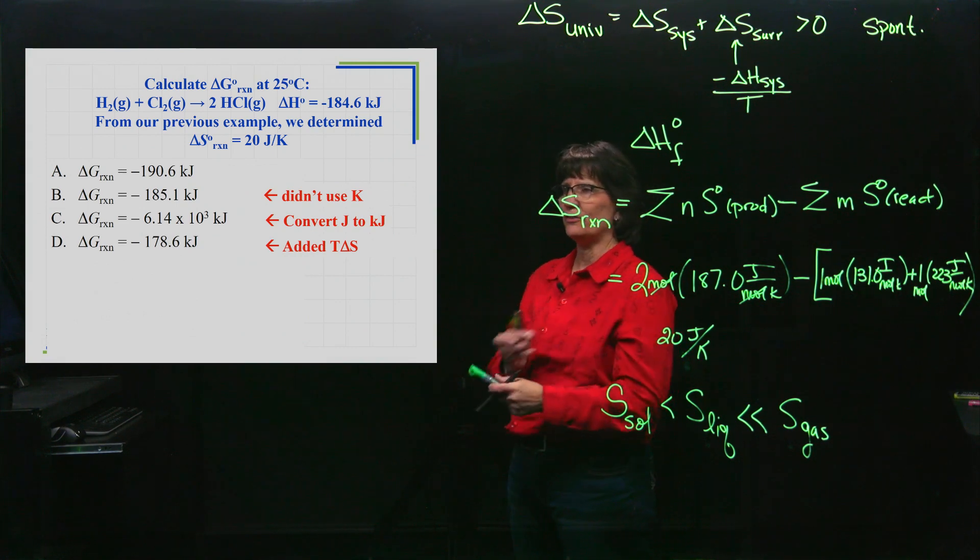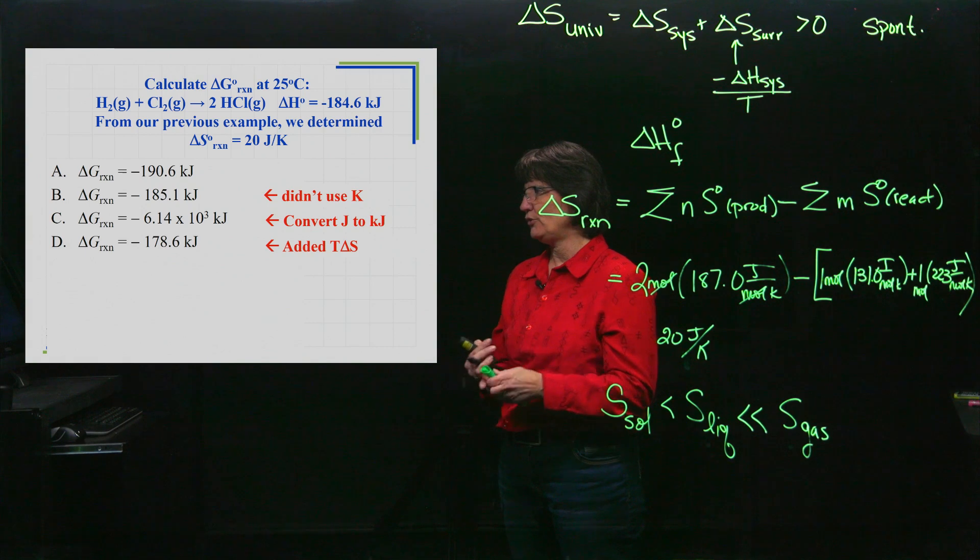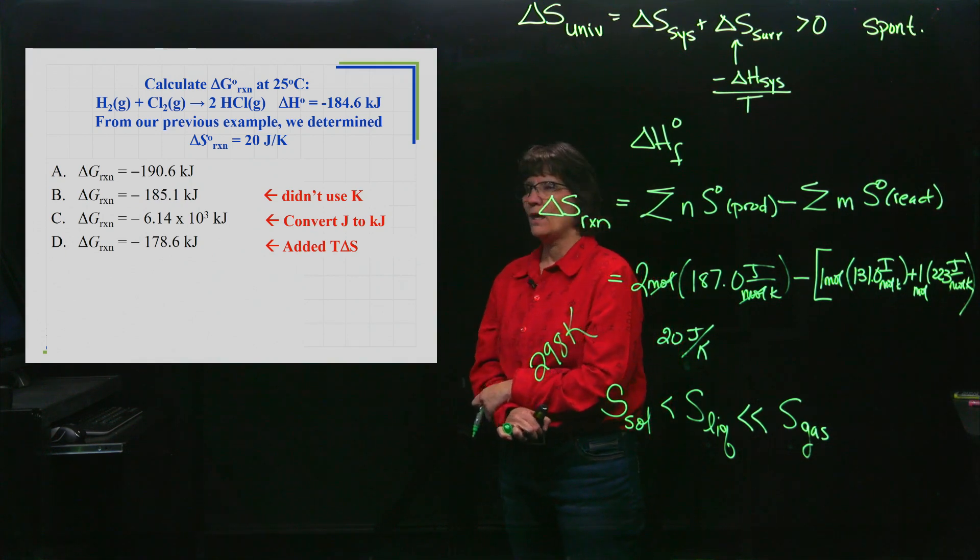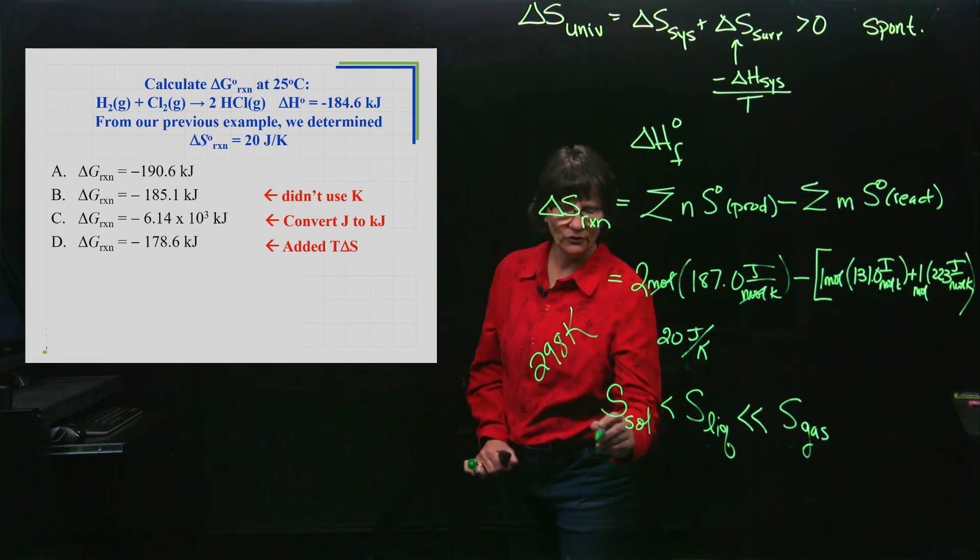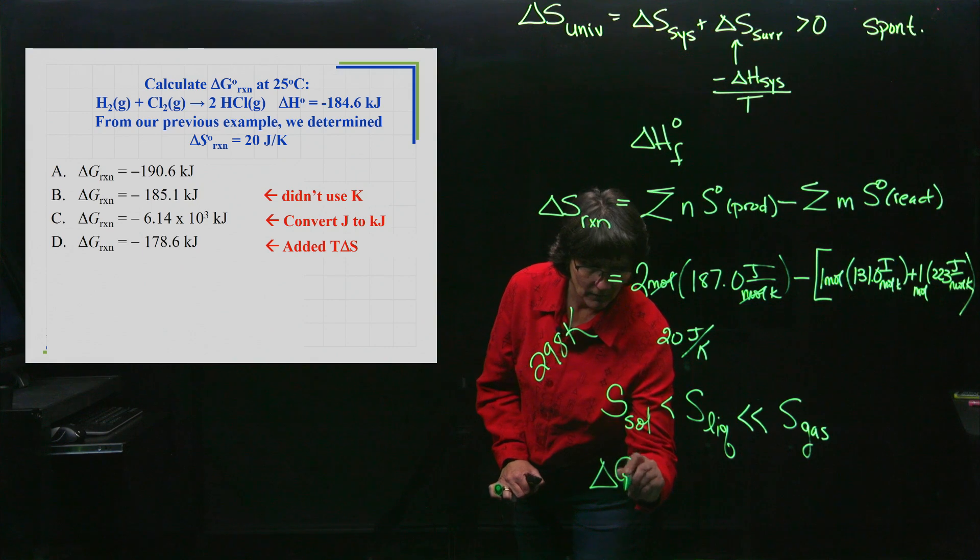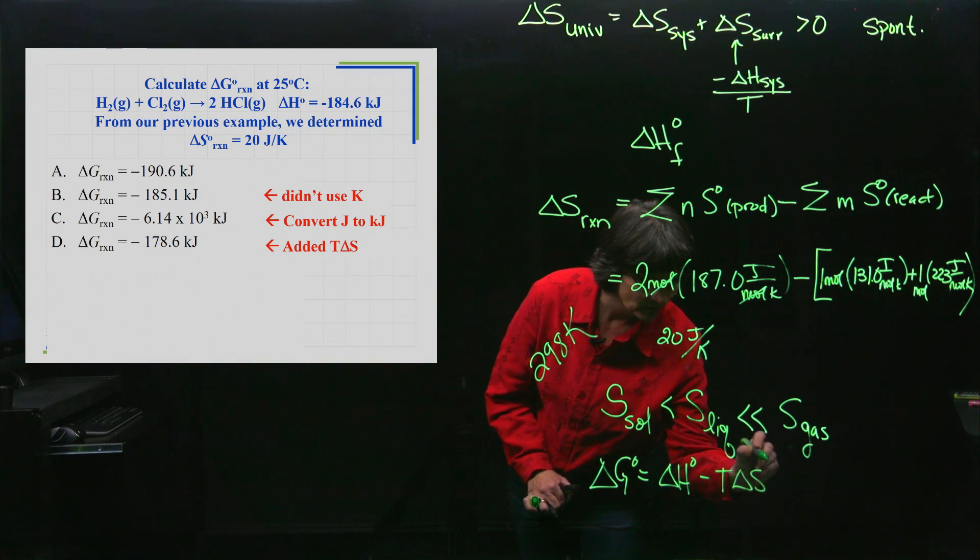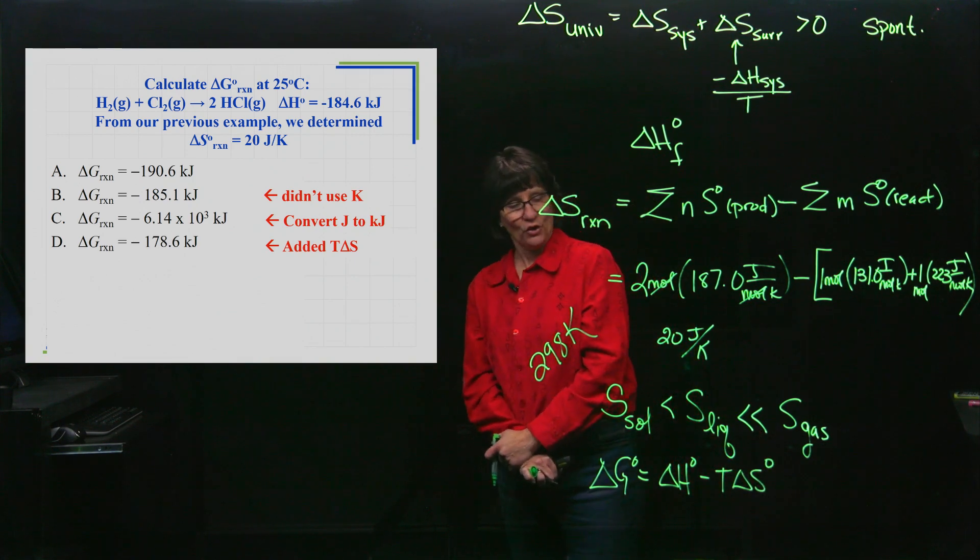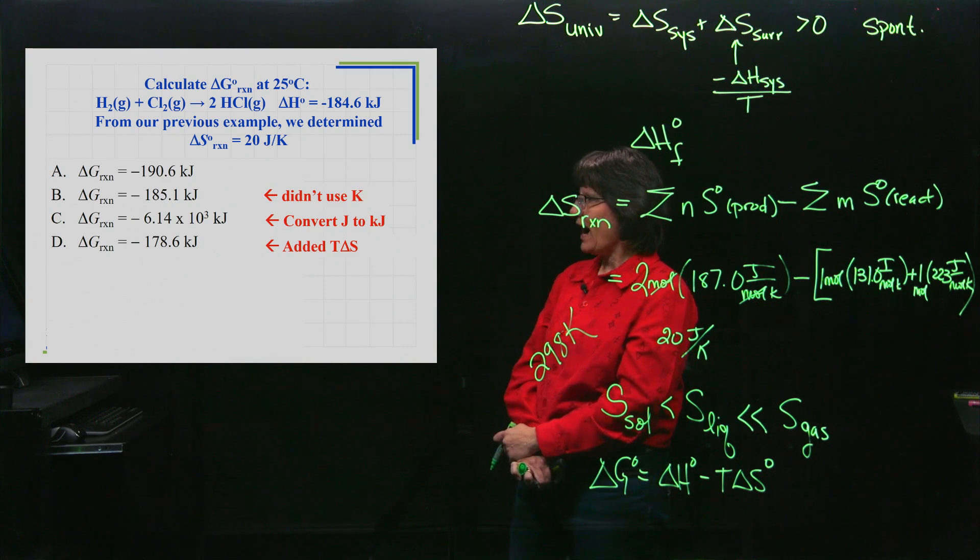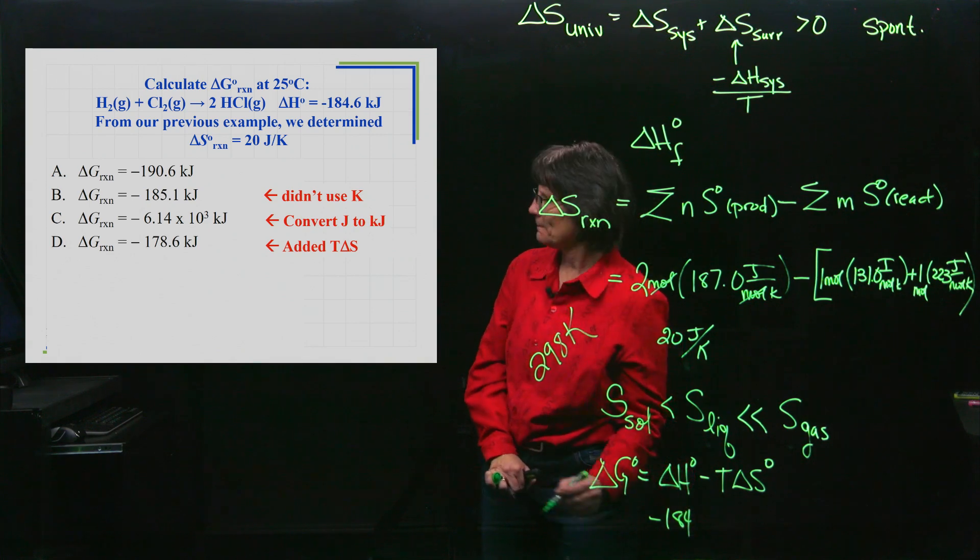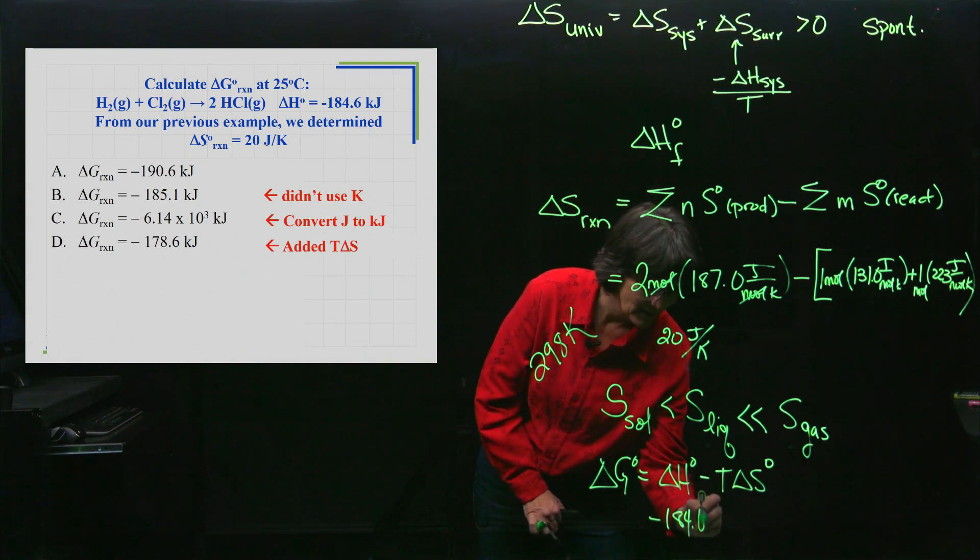You now know the answer. Here are the common mistakes: you must watch your units. If you picked B, you didn't watch your units and didn't convert that 25 degrees Celsius to Kelvin. We have to use 298 Kelvin, or it won't get you the right answer. Another common mistake students do is they just look at the equation - what equation did you use? You use ΔG equals ΔH minus TΔS.